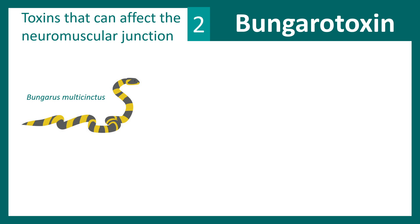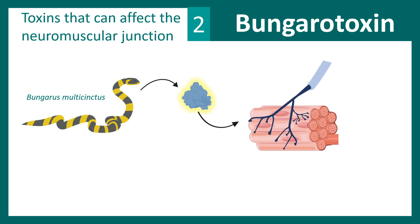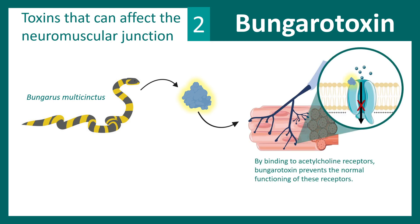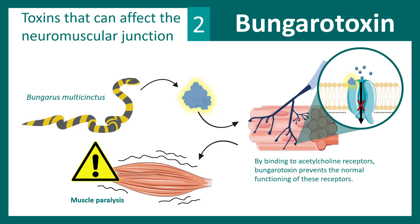Toxins affecting neuromuscular junctions can be diverse. Another toxin is bungarotoxin, derived from a snake. This toxin also affects the neuromuscular junction and leads to muscle paralysis, but in a different way — bungarotoxin binds to the acetylcholine receptor and prevents acetylcholine from binding. This means cations cannot flow through the acetylcholine receptor even when there is nerve stimulation, leading to muscle paralysis. Different toxins thus act via different mechanisms to regulate neuromuscular junction functionality.